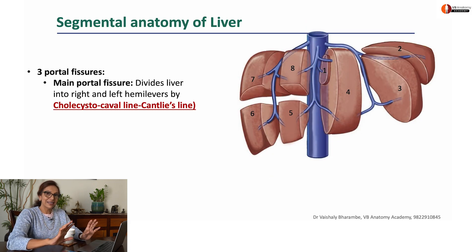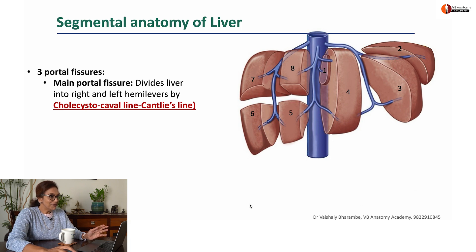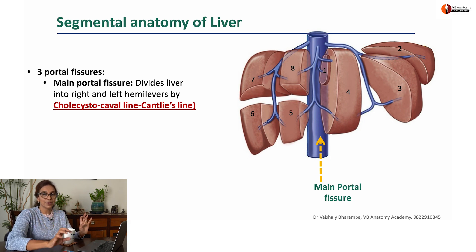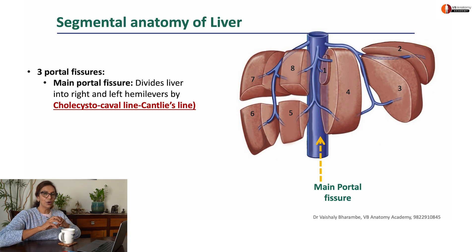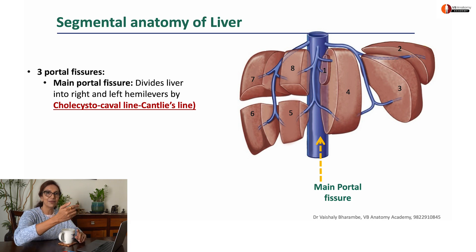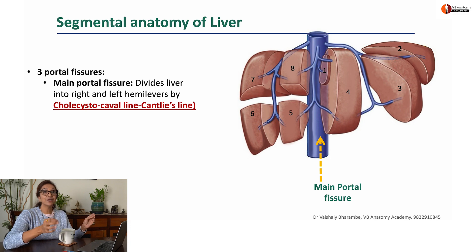This is a dissected out liver with the hepatic veins clearly visible. You will find that there is a main portal fissure which is occupied by the middle hepatic vein, which divides your liver into right and left hemi livers. If the liver is non-dissected, you could draw this line from the gallbladder fossa to the inferior vena cava and back. This is called the Cantlie's line, or the cholecystocaval line.